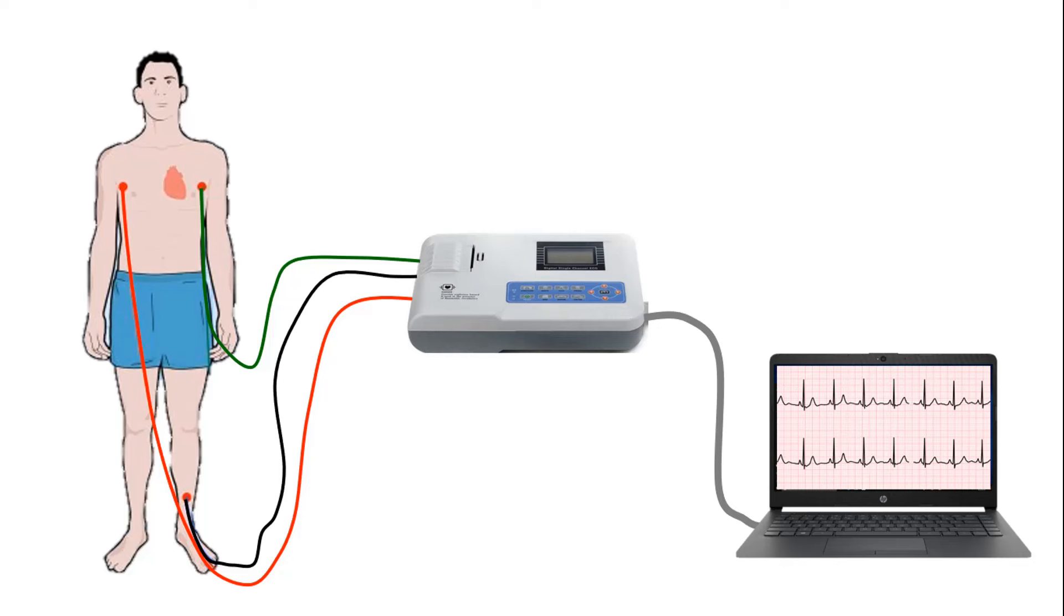Electrodes attached to the skin on the chest, arms and legs area, and electrocardiograph or ECG devices used in the detection of abnormal conditions, operational amplifiers are also used.